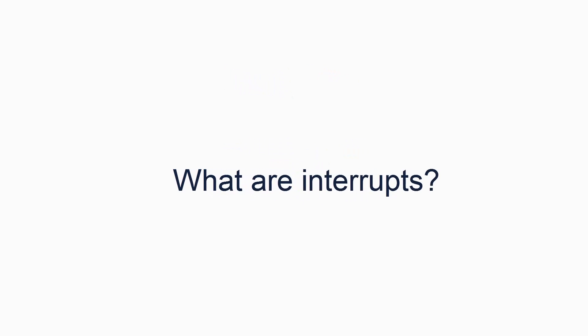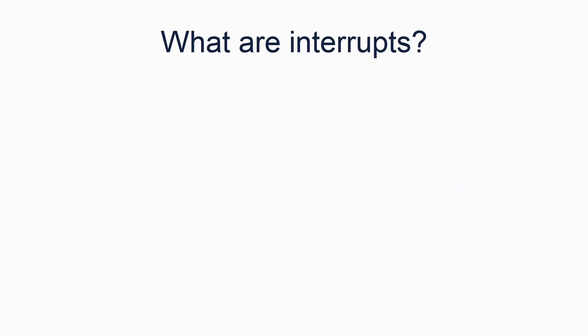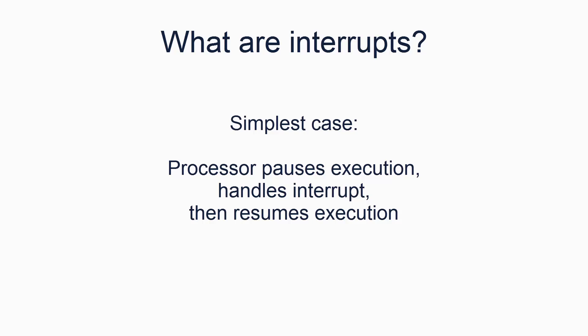Let's take a moment to understand what interrupts are. An interrupt is a hardware signal, triggered by anything from the keyboard to the onboard timer to a divide by zero condition detected by the processor. In the simplest case, when an interrupt signal is received by the processor, the processor pauses the current execution and jumps to a handler method for the interrupt. When the interrupt handler returns, the processor, ideally, resumes what it was previously executing.